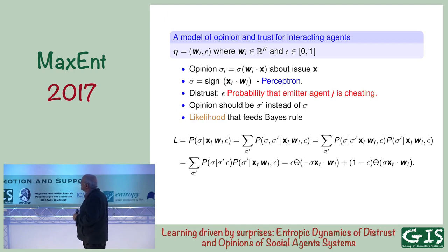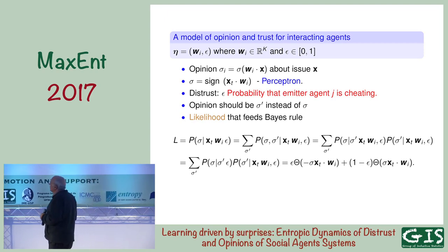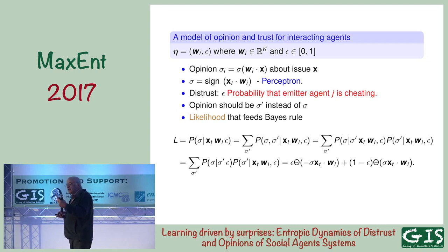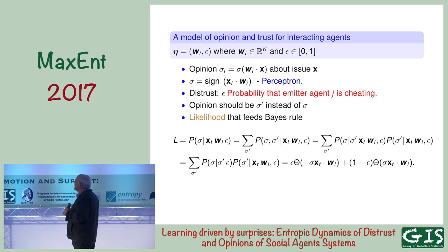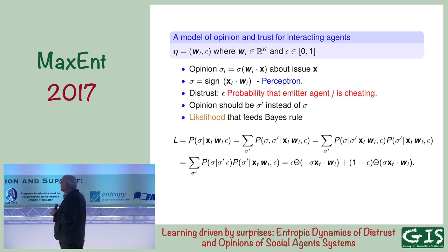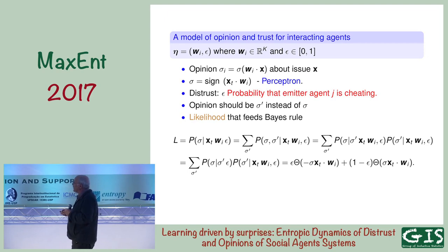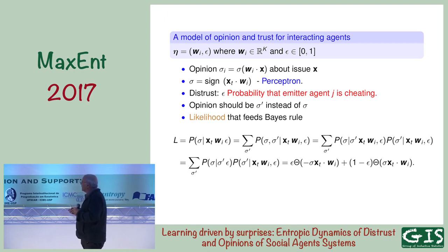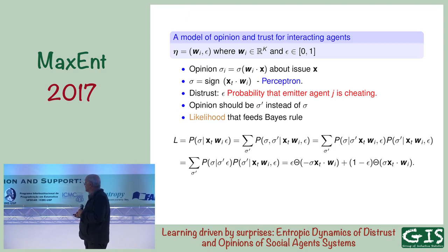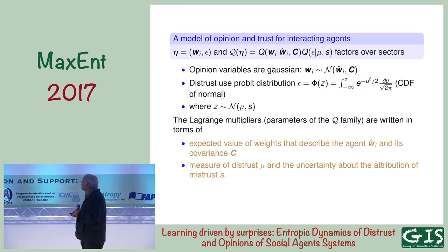Distrust is the probability of cheating. Instead of receiving sigma, the agent should have received sigma prime, and that leads to a likelihood which fits the Bayes rules: epsilon times something that is one or zero depending on whether they disagree, and one minus epsilon times one if they agree or zero if they disagree.